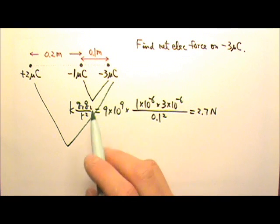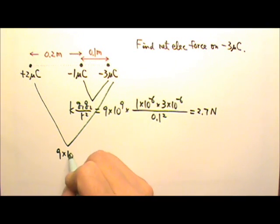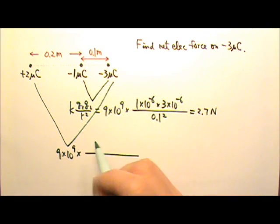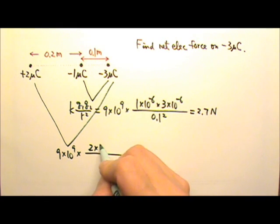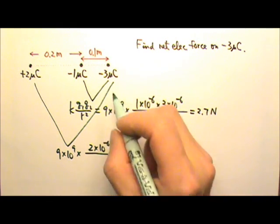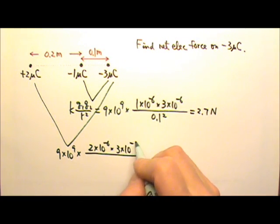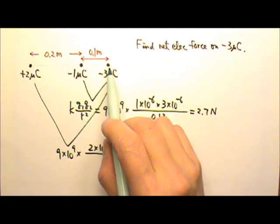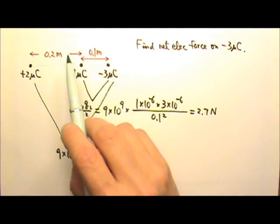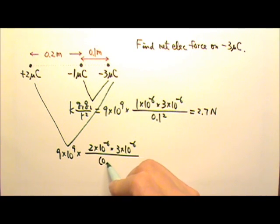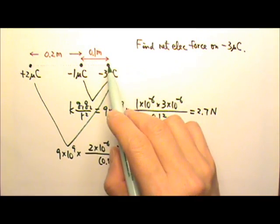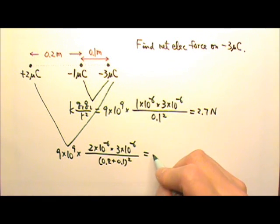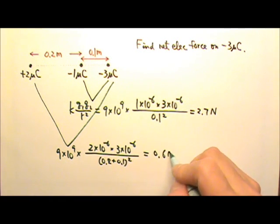The force between those two will be K, Q1, 2 µC times Q2, 3 µC divided by the distance squared. The distance would be 0.2 plus 0.1. That's the total distance between the two. And this will give us 0.6 N.